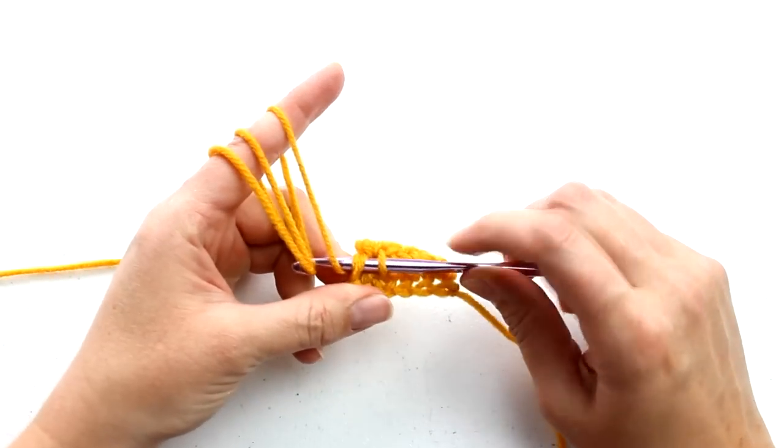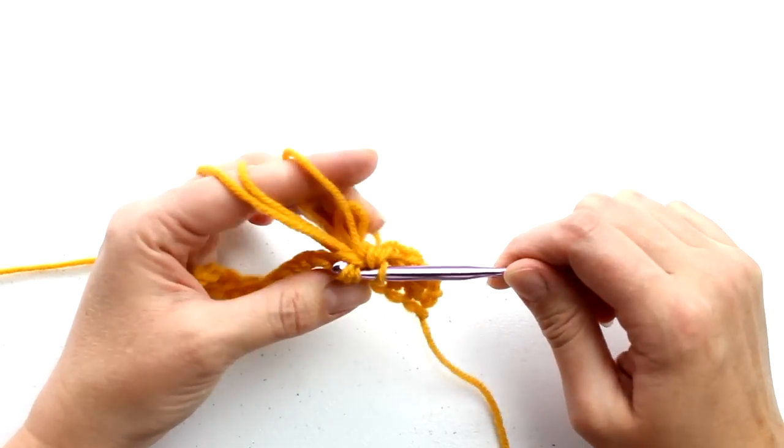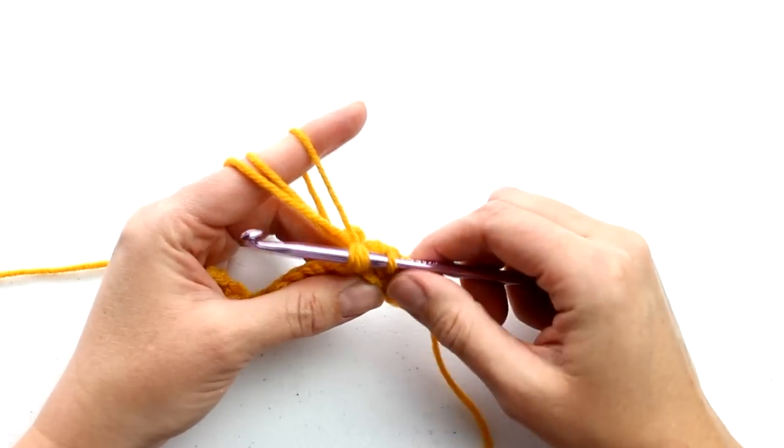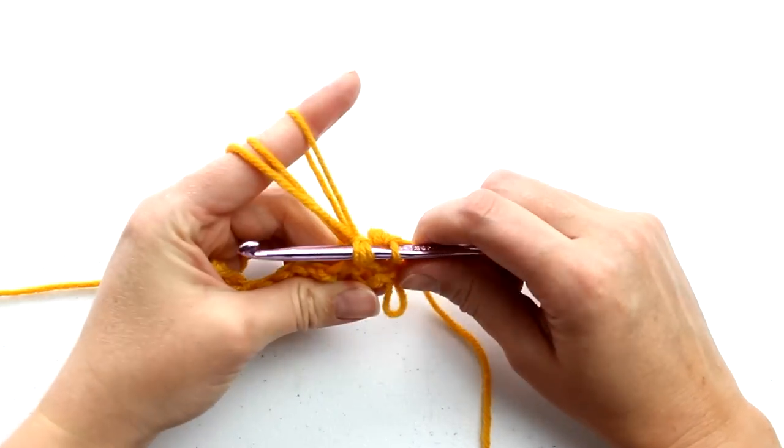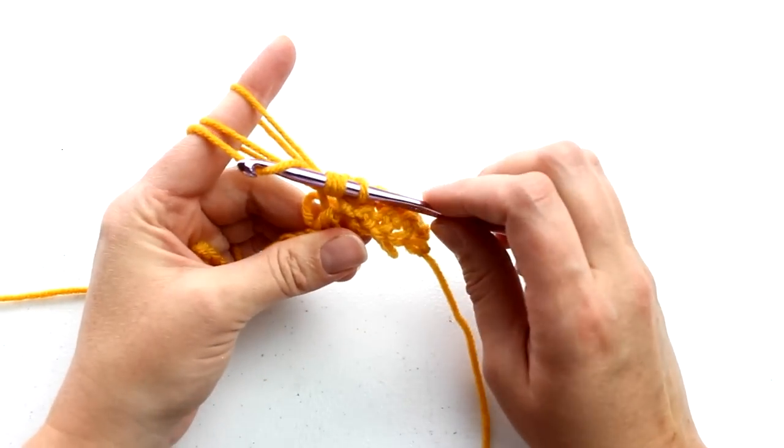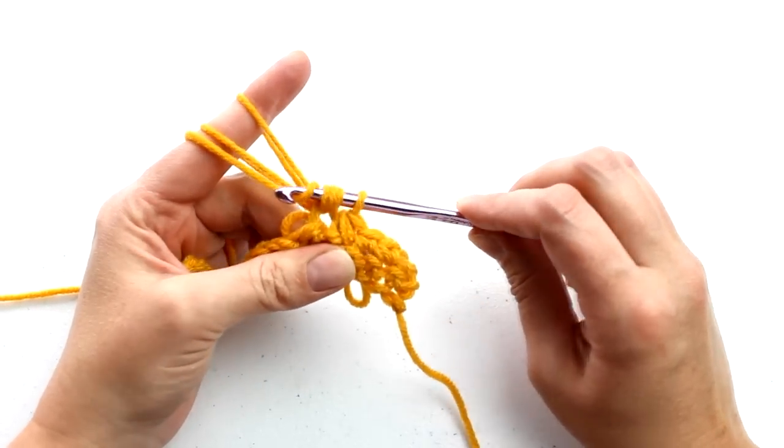Okay, so when you're happy with the length of your loops, pull all three through only the stitch. There will now be four loops on your hook. Okay, so go ahead and grab that working strand of yarn, and then pull it through all four loops on your hook.